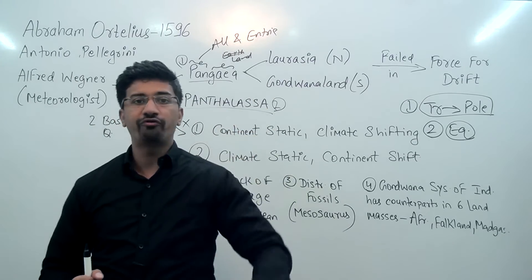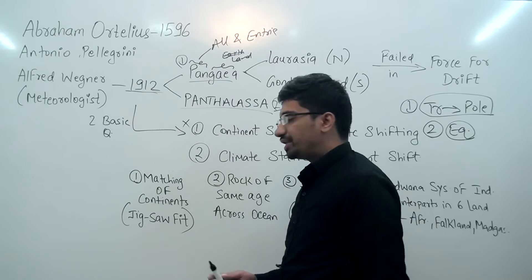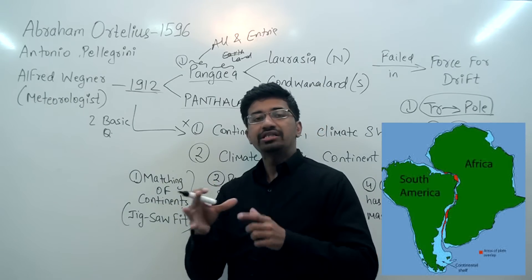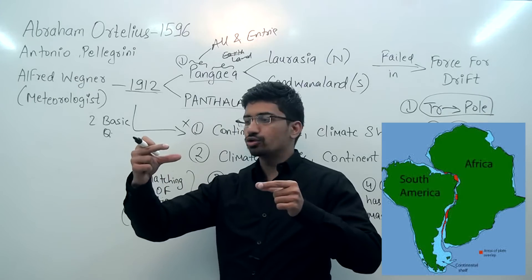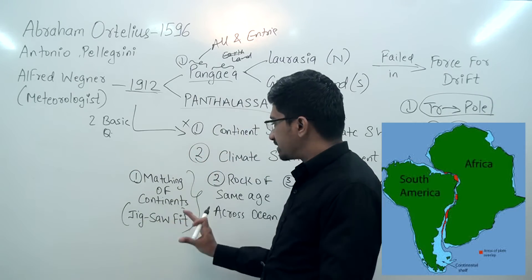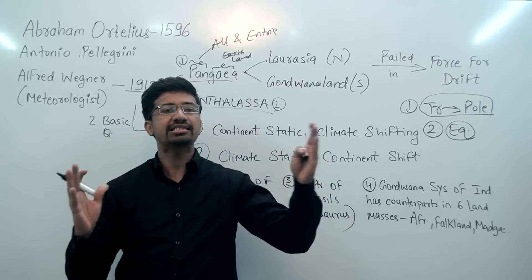Let's start with the proofs of the theory. First, the easiest evidence: the world map. You match the continents like a puzzle. When you look at South America and Africa — when you place South America next to Africa, they fit together. Similarly, when you add Madagascar, it also fits. This jigsaw fit suggests these landmasses were once joined.